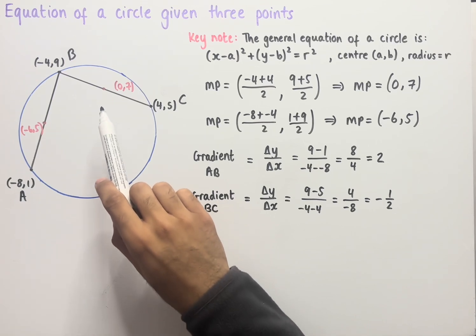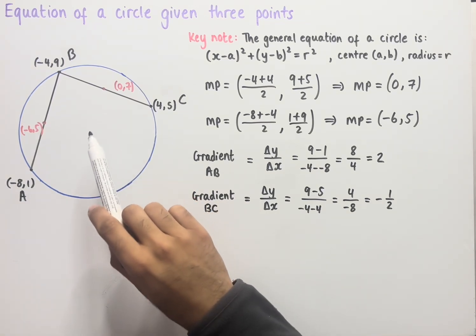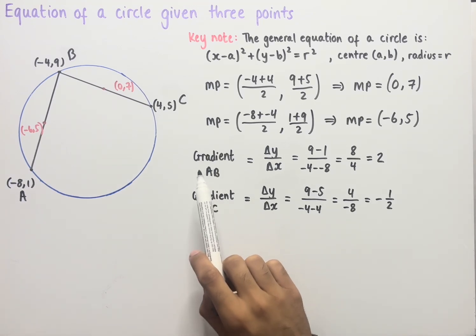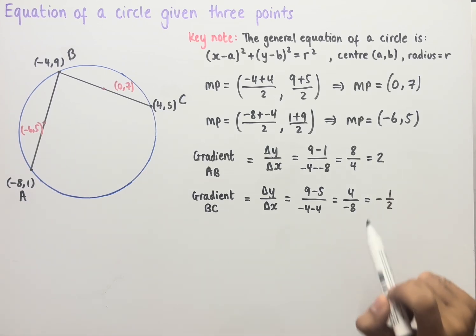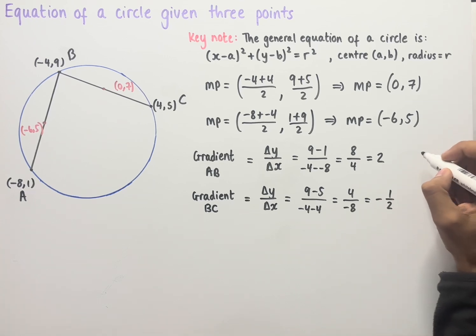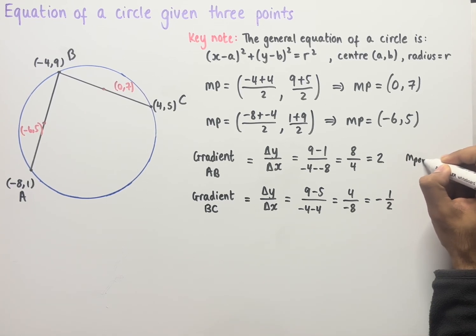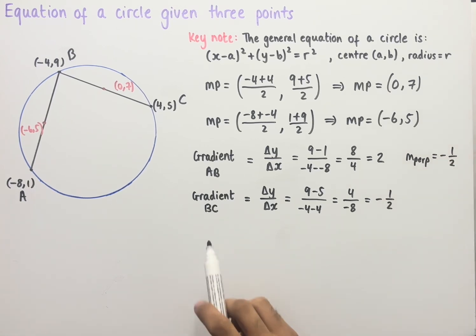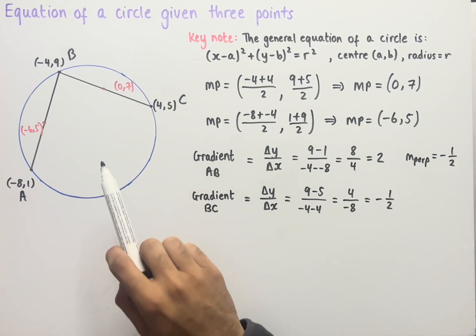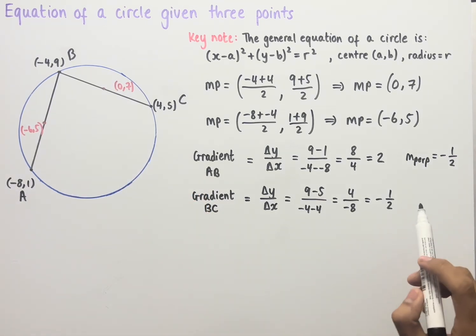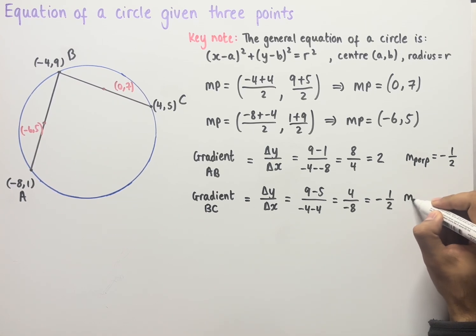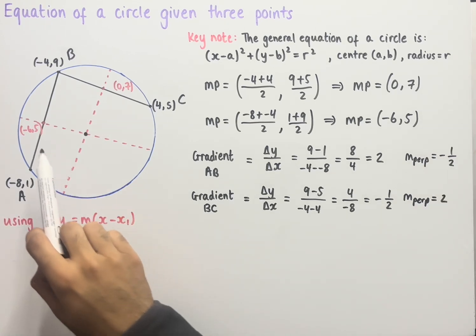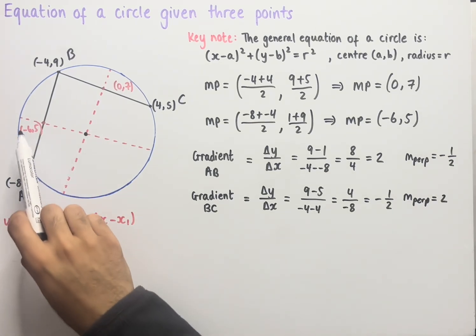A key fact is that the perpendicular bisector of any chord always passes through the center of a circle. The gradient of the perpendicular bisector of AB is the negative reciprocal of 2, which is -½. Likewise, the negative reciprocal of -½ gives 2 for the perpendicular bisector of BC. We've now drawn both perpendicular bisectors, which intersect at the center of the circle.